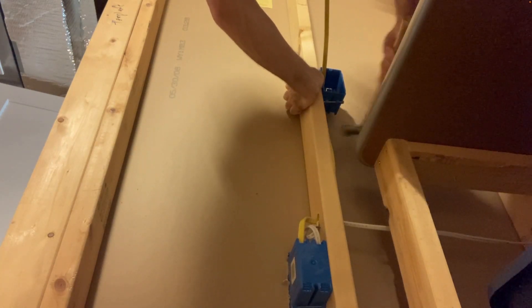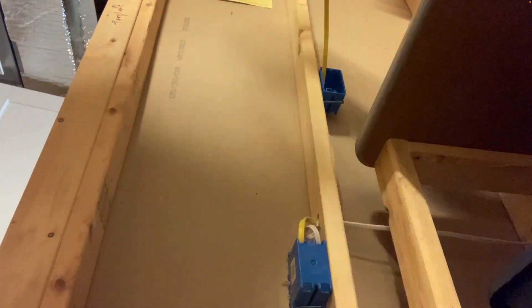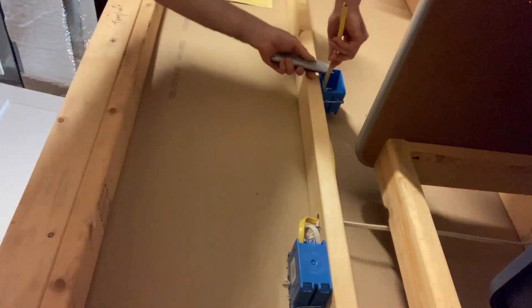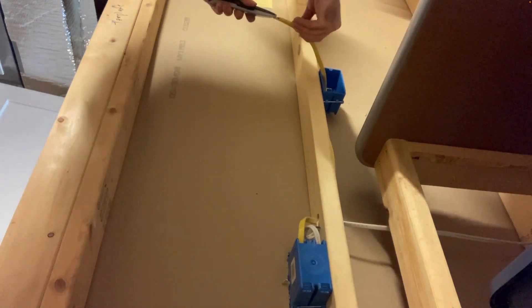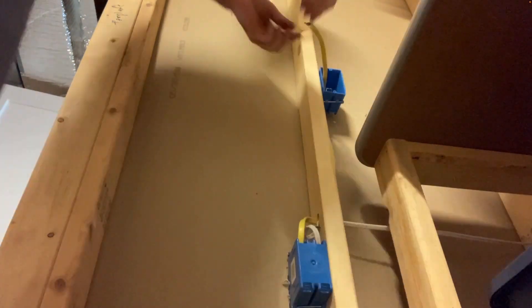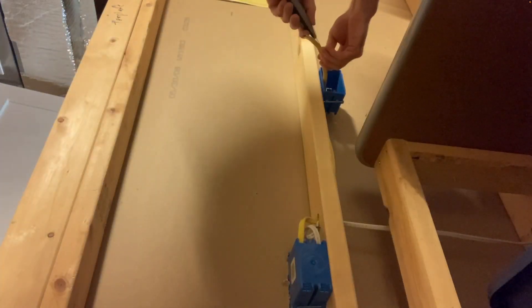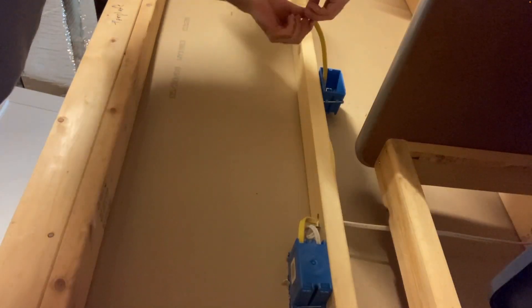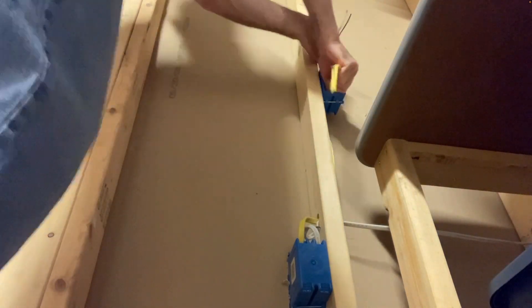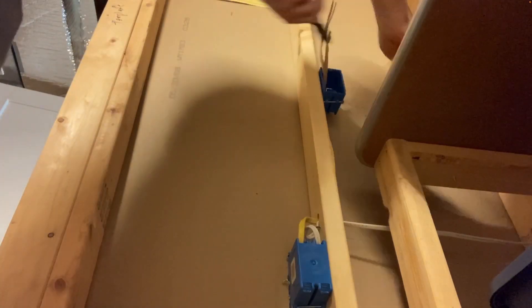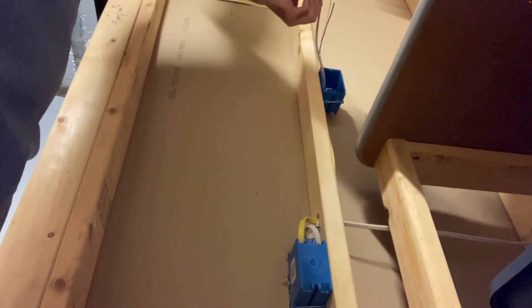Again, securing the Romex. We'll strip off the sheathing. This is solid copper wire inside here—it has a hot, a neutral, and a ground. You can buy Romex at your local home center.